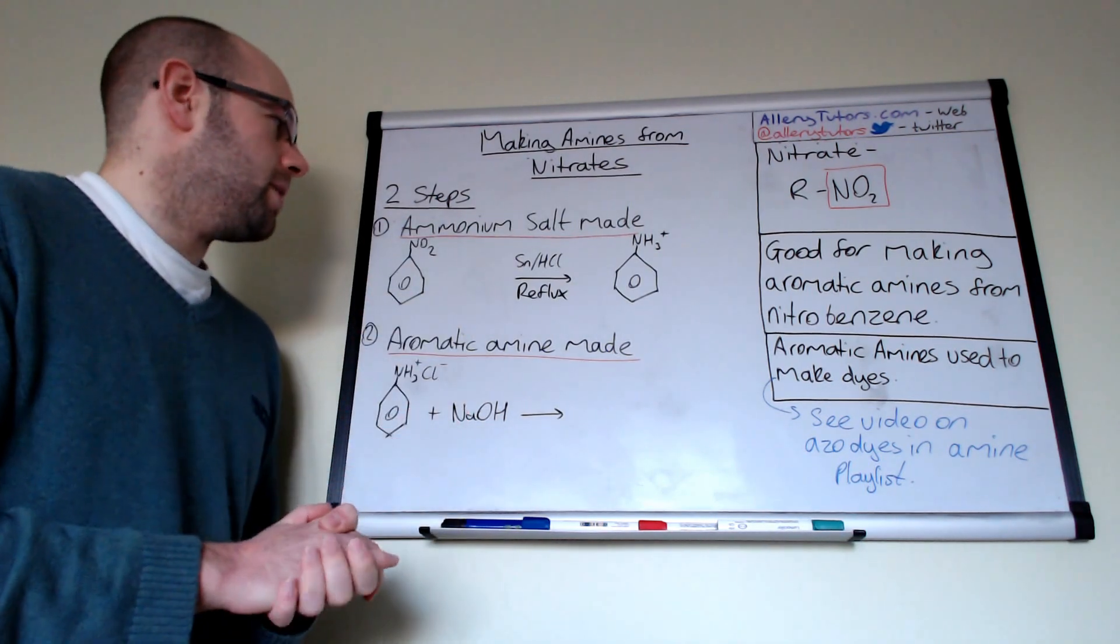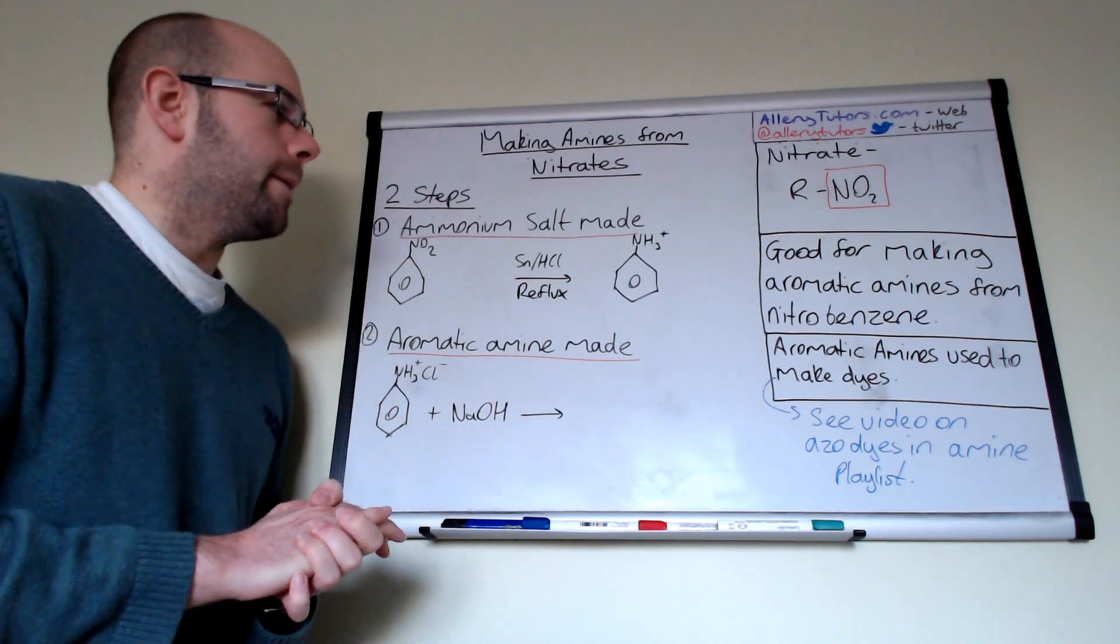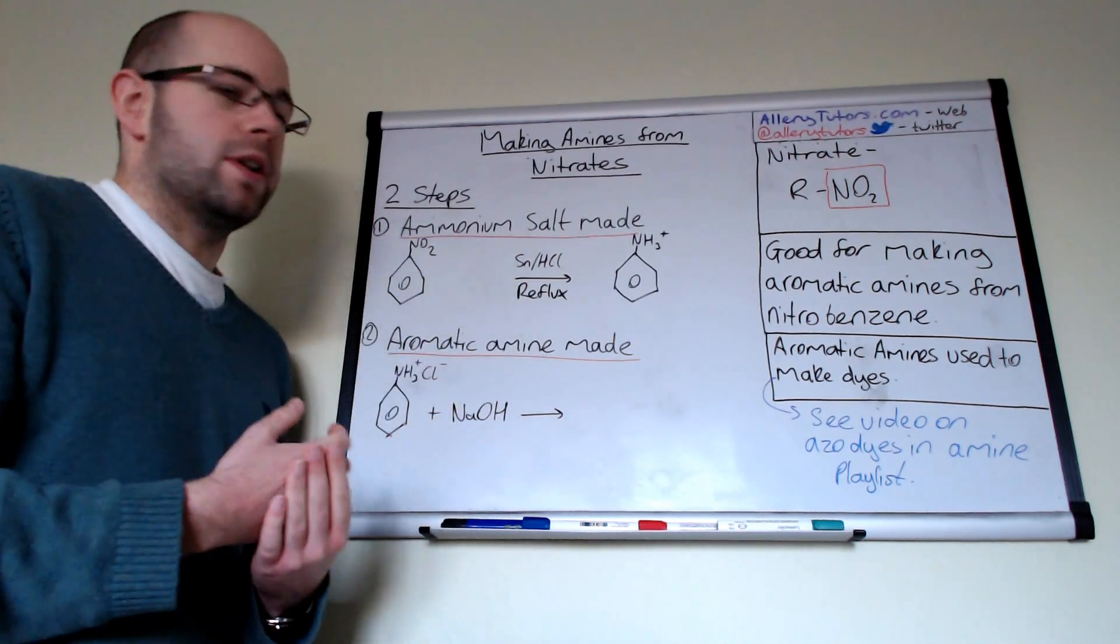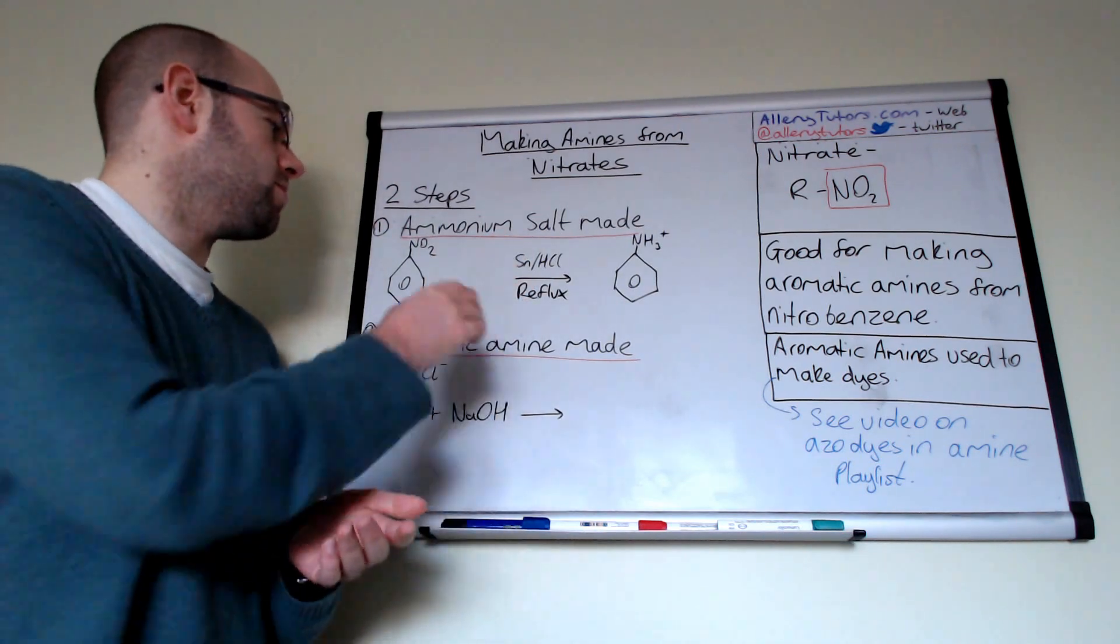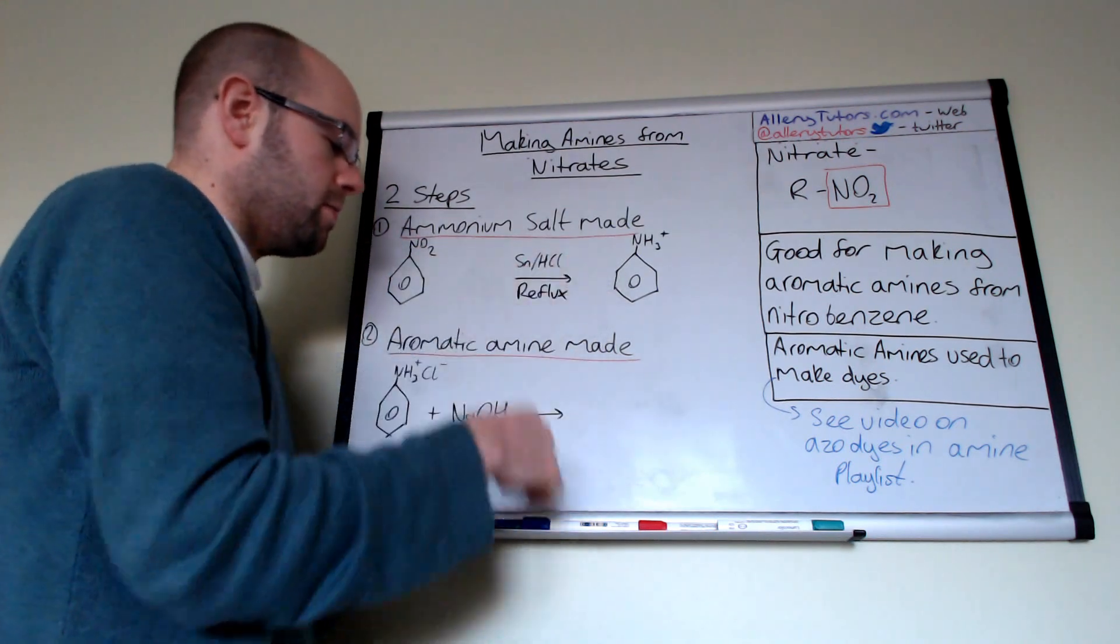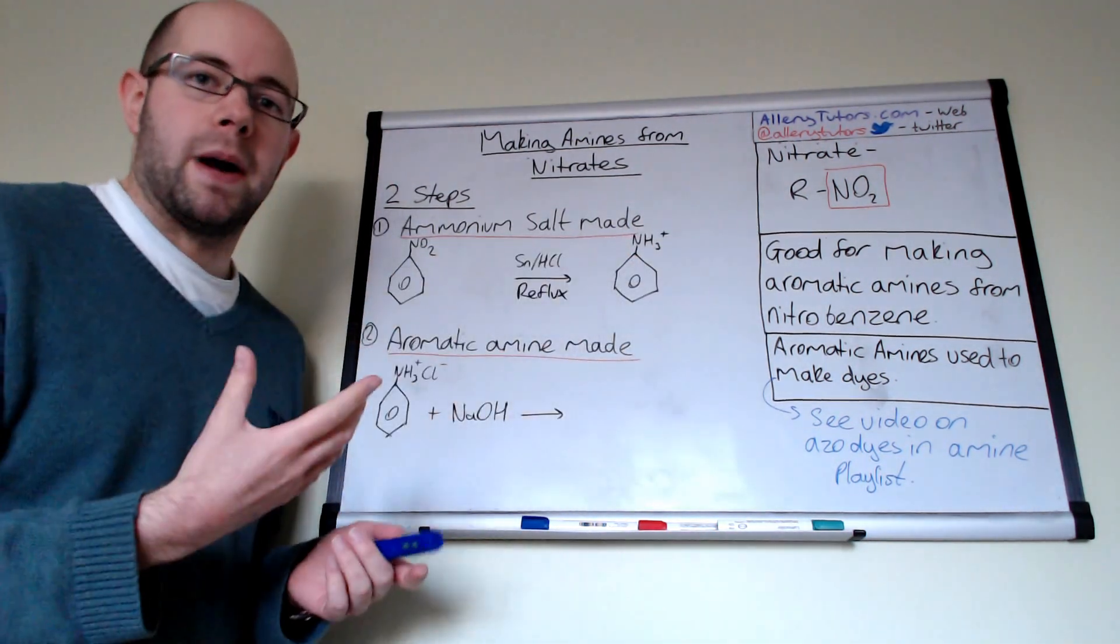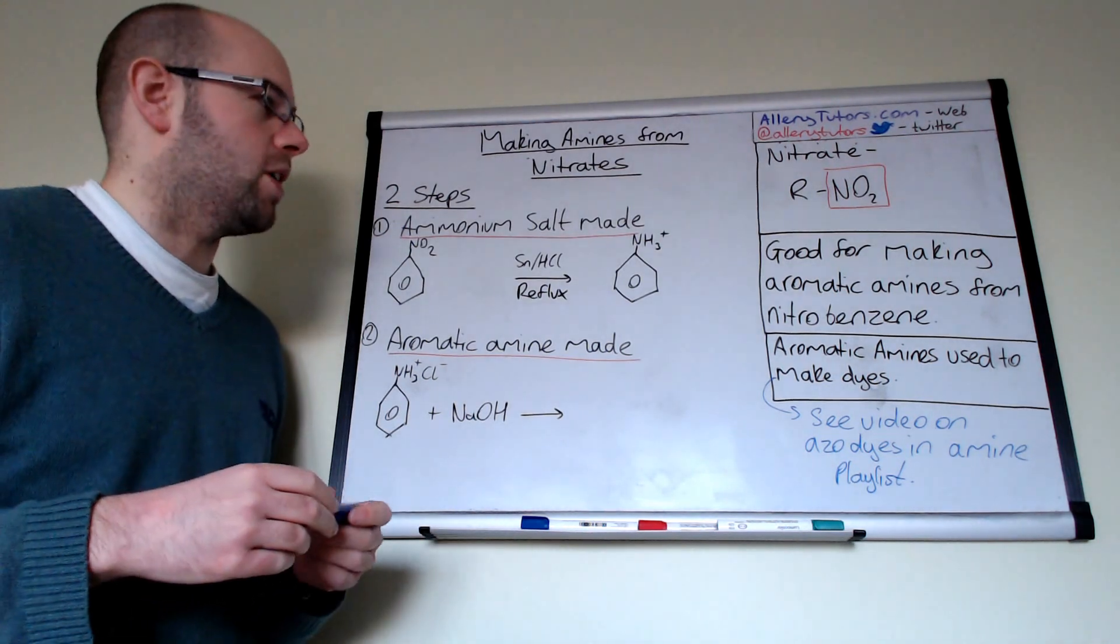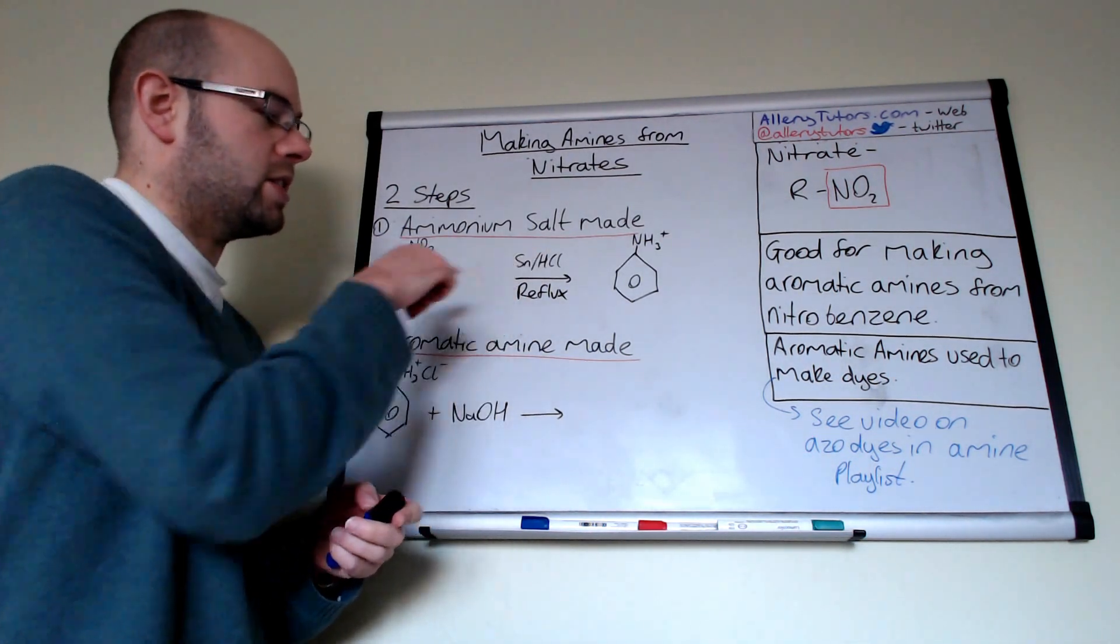So we're going to start with the first step. If we take our nitrobenzene, that's this molecule here, what we do is we form a salt intermediate product first, and it's done in two ways. So this is the first way - we've got nitrobenzene and we're going to make our salt. Now you can see here that this is obviously not balanced, so we're going to balance it in terms of a redox equation, and I'm going to explain how these things work as well.